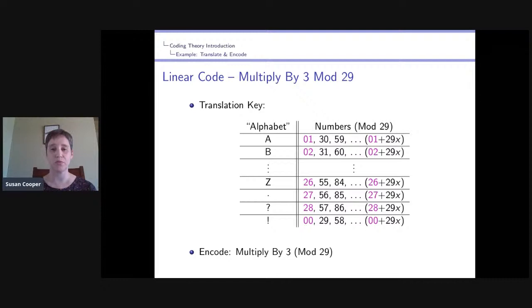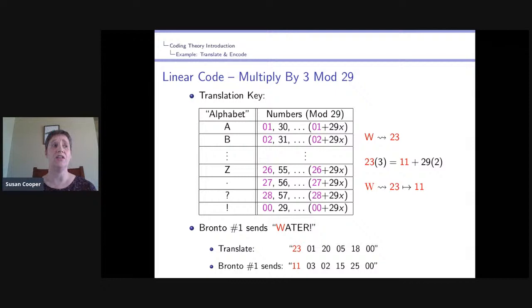Okay, so that's how we're going to encode by three. Let's look at an example. Let's suppose that Brontosaurus number one has had a lot of leaves to eat, and so he's going to want to send the word water. To do so, he translates his W to its corresponding number. W is the 23rd number in the alphabet, and then he multiplies 23 by the number three to encode it. There you get the number 69, which can be written as 11 plus a multiple of 29. So we treat that output 69 as the number 11. So W is translated to 23 and then encoded to the number 11, which you can see down below in our chart. And you would do this for each letter in water with an exclamation point. So here I've done the work for A. A was the first number multiplied by three, and it gets encoded into the number three, and so on and so forth.